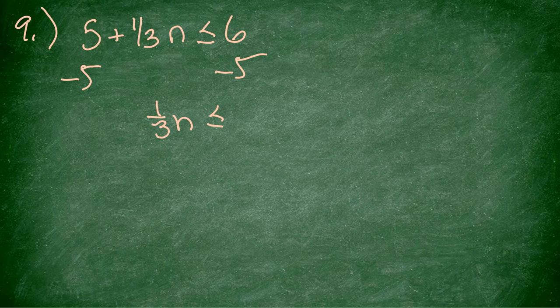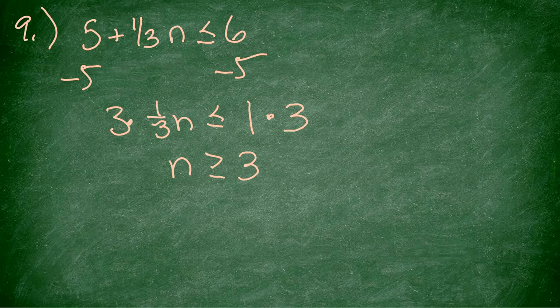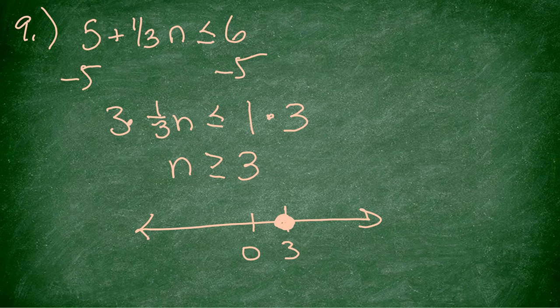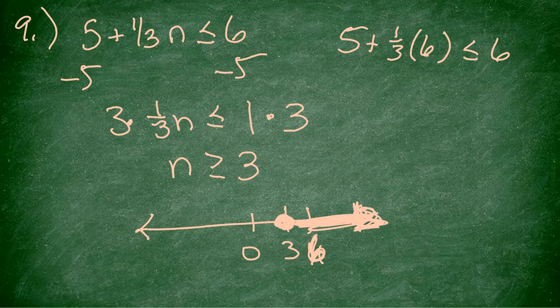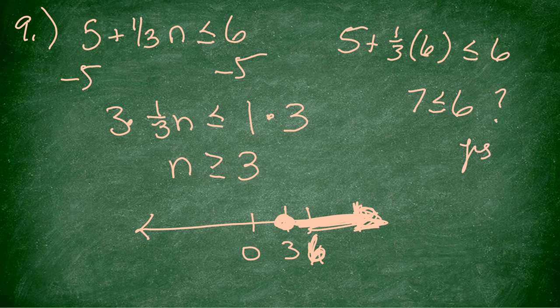Number 9: 5 plus one-third n is less than or equal to 6. I subtract 5 from both sides to get one-third n is less than or equal to 1. I multiply by 3 to get n is less than or equal to 3. Number line: 3 with a closed circle, shade to the right. I check 6: 5 plus one-third times 6 is 7, and 7 is less than or equal to 6... yes, it is. Good.